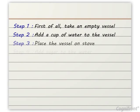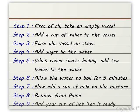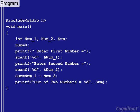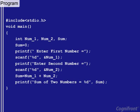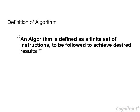And your cup of hot tea is ready. So all the steps that we performed just now to prepare tea are together called an algorithm. Similarly, to write a program, we have to plan the steps to be performed to achieve the desired goals. Therefore, an algorithm is defined as a finite set of instructions to be followed to achieve the desired results.